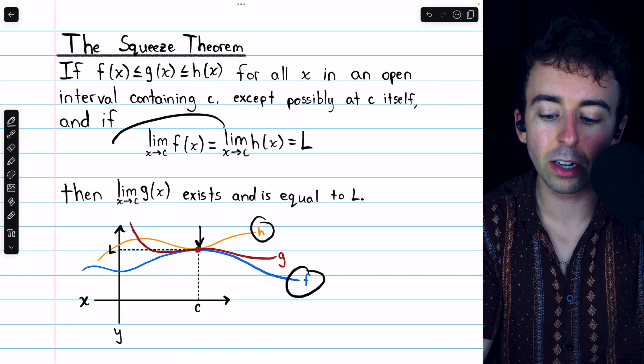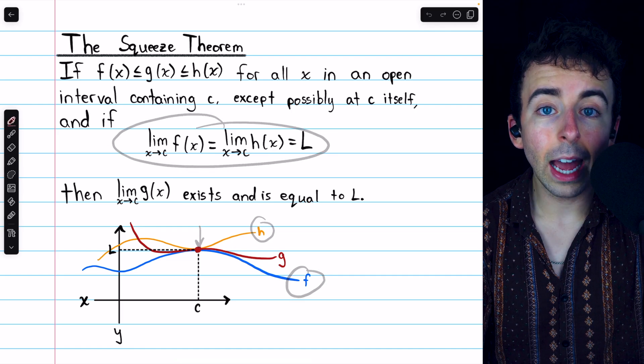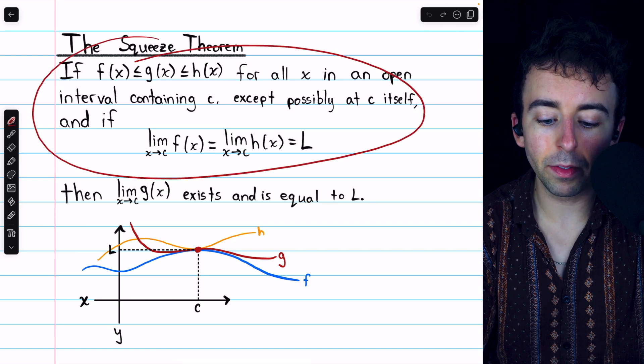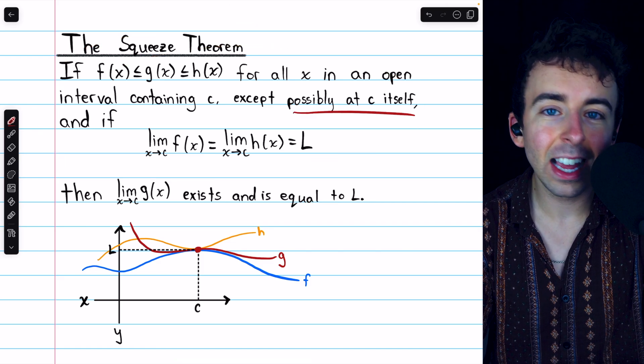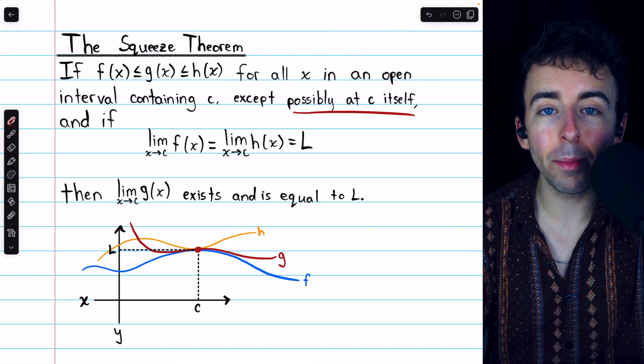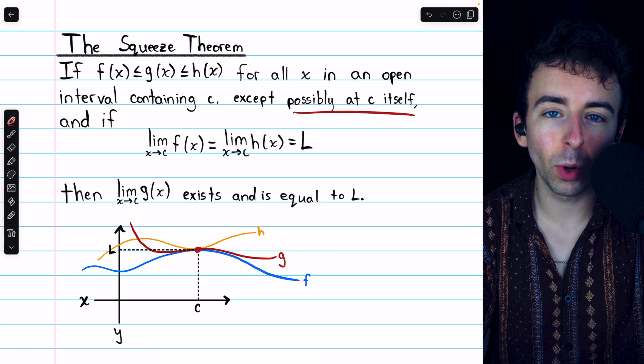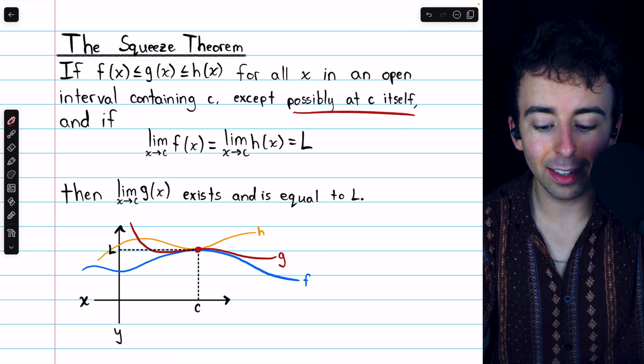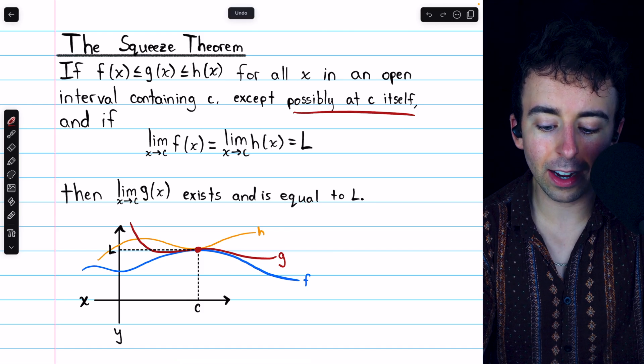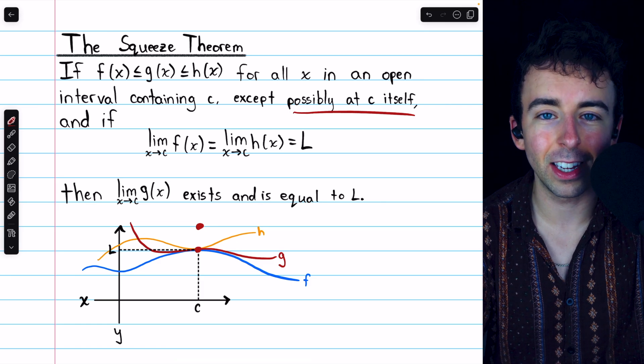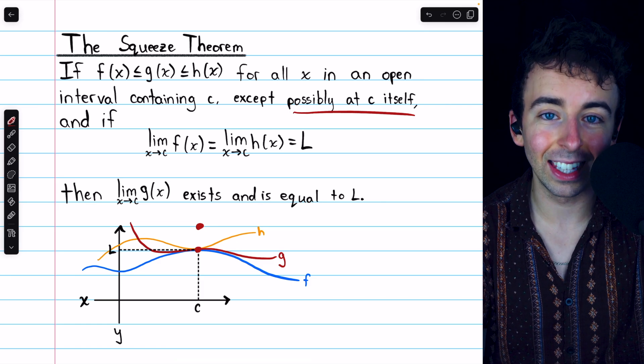Provided those limits are equal to some finite number. And remember, as we see in the statement of the theorem, it doesn't actually matter what happens at c. As usual, when we're thinking about limits as x approaches c, what actually happens at c is not relevant. So g, instead of taking on this value, could take on some other value at c. That would not change what the limit is.